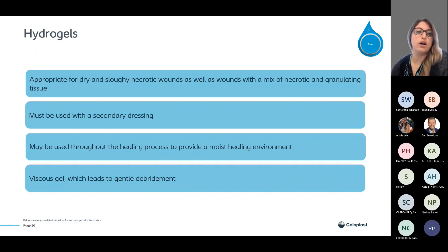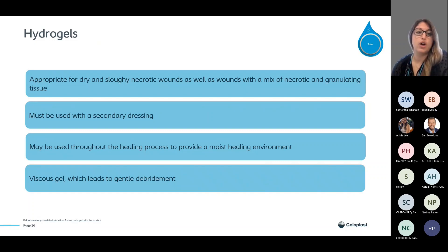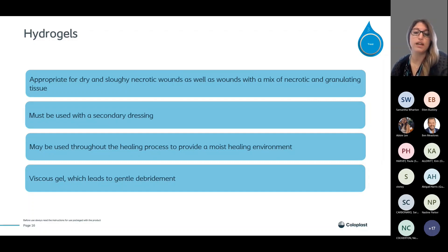Hydrogels are appropriate for dry, sloughy, or necrotic wounds, as well as wounds with a mix of necrotic and granulating tissue, and must be used with a secondary dressing. They are a viscous gel and may be used throughout the healing process to provide a moist healing environment, leading to gentle debridement.